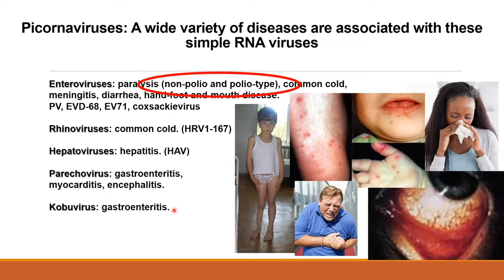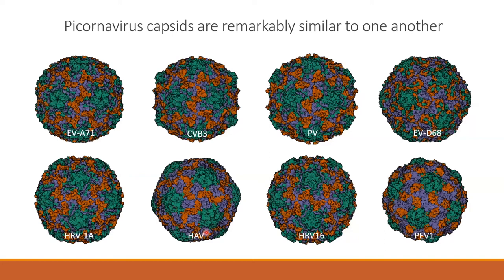You might think that since these viruses cause such a variety of diseases they must be radically different from one another — and in fact they're not. These space-filling models of picornavirus capsids show they're remarkably similar, all having this five-fold axis of symmetry seen in a pentagon shape throughout. The top row are ones thought to be associated with neuro-disease and the bottom are not, and we really can't tell them apart. We don't know why some affect neural processes and some do not.